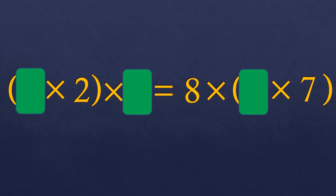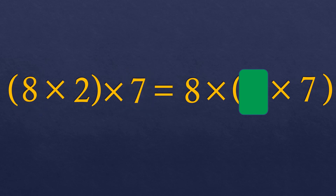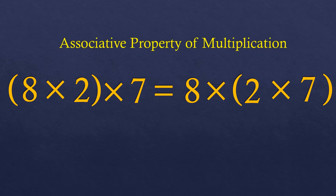Now we have: (blank times 2) times blank equals (8 times blank) times 7. Based on the right side, there are 8 and 7, so the left side must contain 8 and 7. The missing number on the right is based on the left — there is 2 — so it must also be 2. This is regrouping from (8 and 2) to (2 and 7), with the operation being multiplication, so this is the associative property of multiplication.